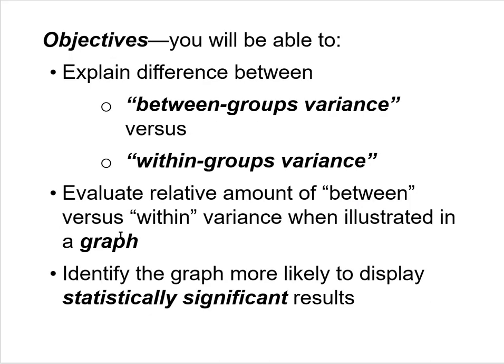Our objectives for this lecture: by the end, you should be able to explain the difference between between-groups variance and within-groups variance. You should be able to evaluate the relative amount of between versus within variance illustrated in a graph — looking at dot plots, comparing two graphs, and identifying which has more or less between or within variance. You should also be able to identify the graph more likely to display statistically significant results.